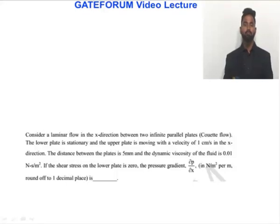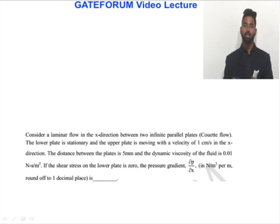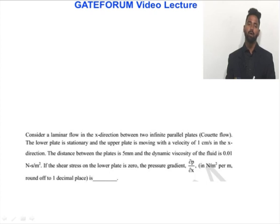Consider a laminar flow in the x-direction between two infinite parallel plates — this is Couette flow. The lower plate is stationary and the upper plate is moving with a velocity of 1 centimeter per second in the x-direction. The distance between the plates is 5 mm and the dynamic viscosity of the fluid is 0.01 newton-second per meter square. If the shear stress on the lower plate is zero, find the pressure gradient ∂p/∂x, rounded off to one decimal place.